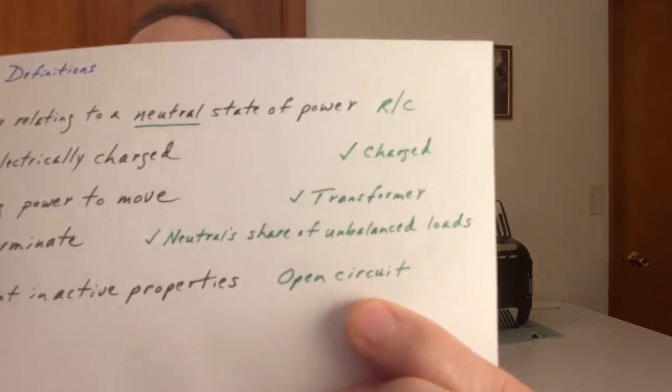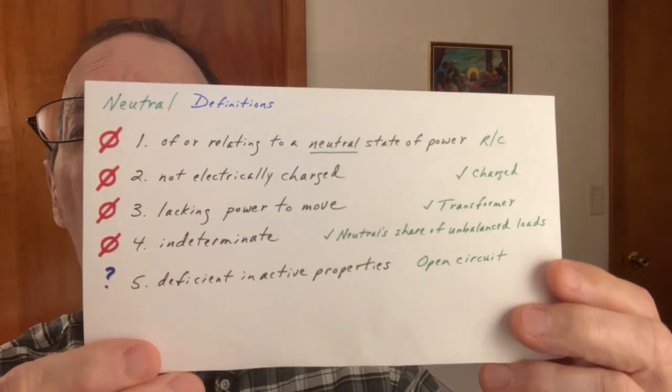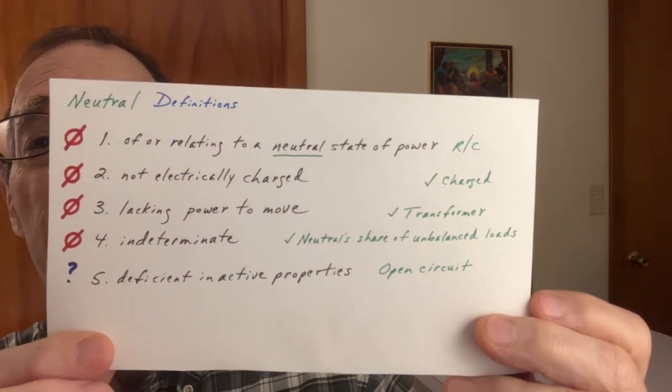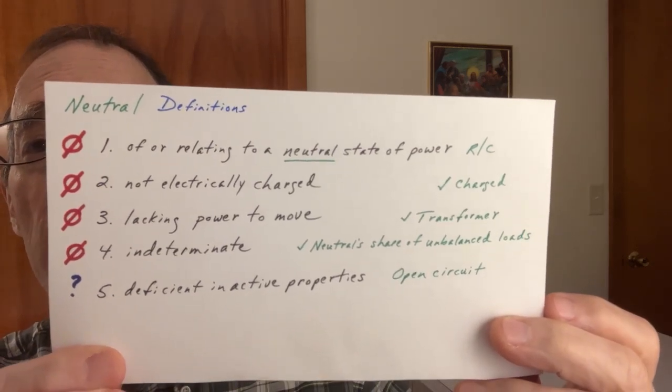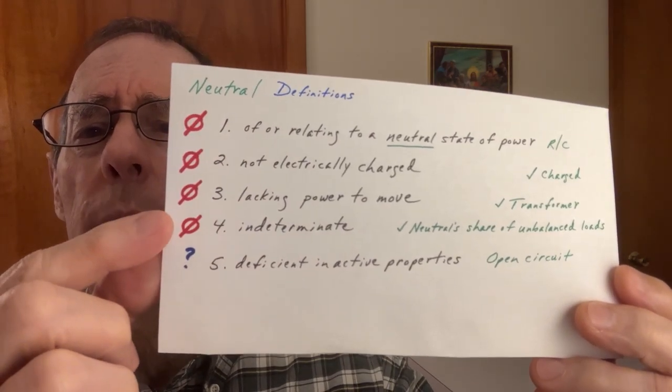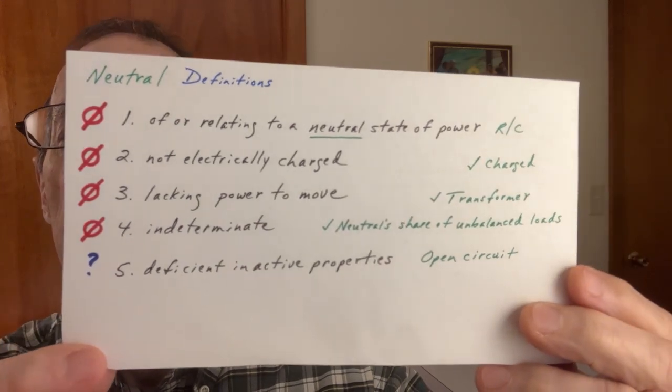Another definition is 'indeterminate' — well, when the neutral is carrying a share of the load in an unbalanced circuit, the neutral's share is determinate. It can be measured with a clamp-on meter; you can clamp around the wire and tell how many amps are going through. Another definition is 'deficient in active properties' — that's only if there's an open circuit and no current flowing. So four of these outside definitions fail to help us, and one is suspect.